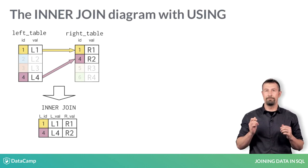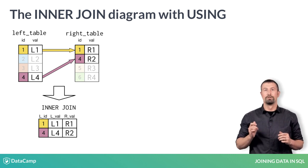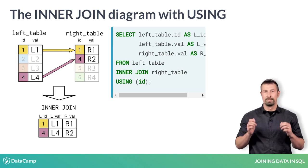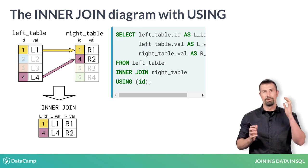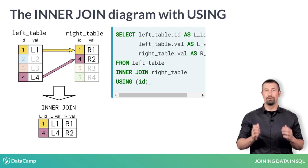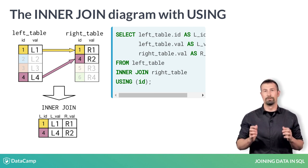When the key field you'd like to join on is the same name in both tables, you can use a USING clause instead of the ON clause you have seen so far. Since ID is the same name in both the left table and the right table, we can specify USING instead of ON here. Note that the parentheses are required around the key field with USING.